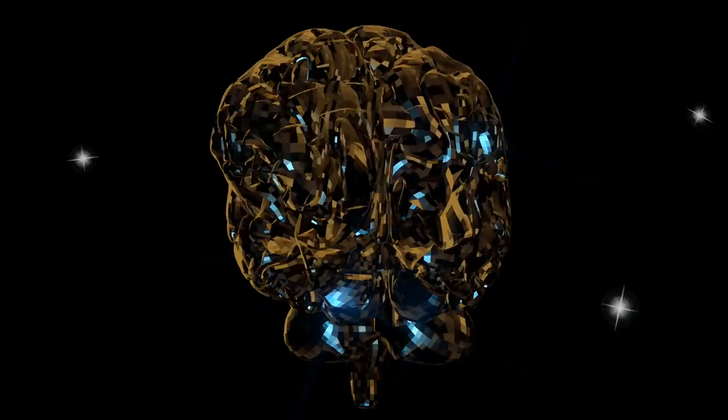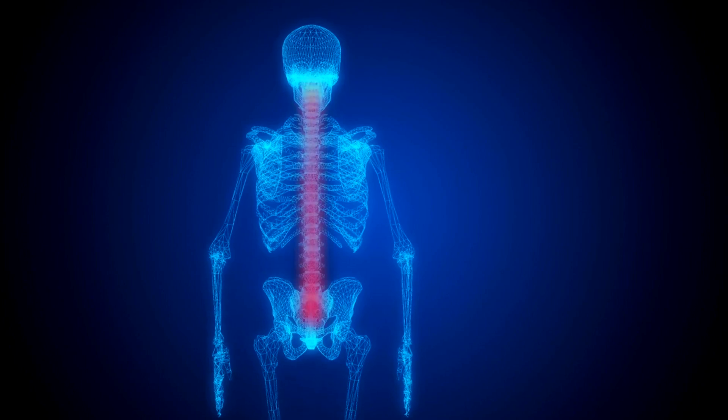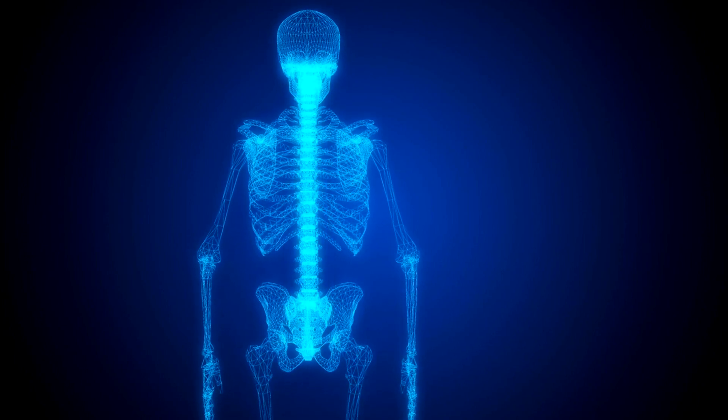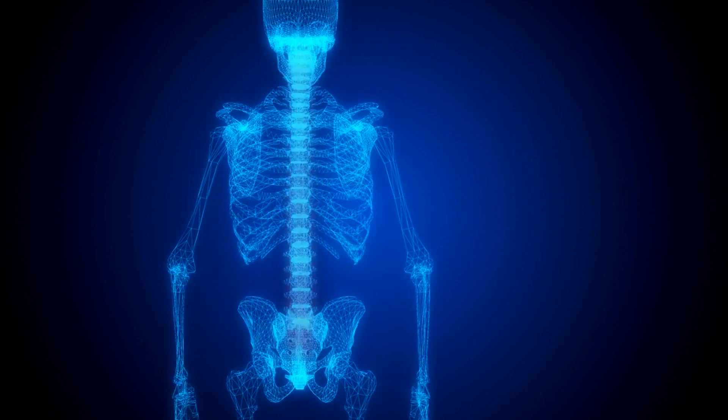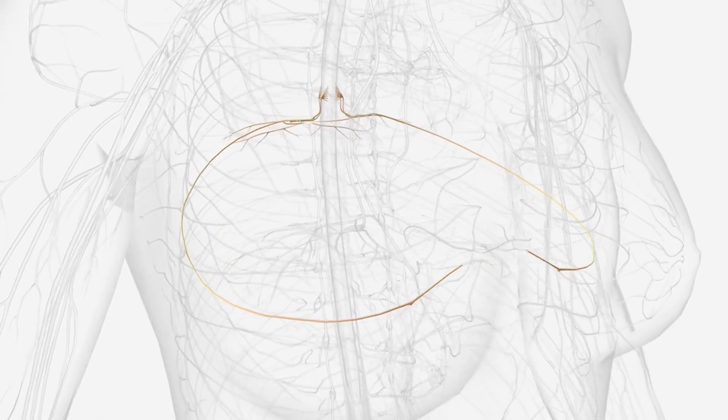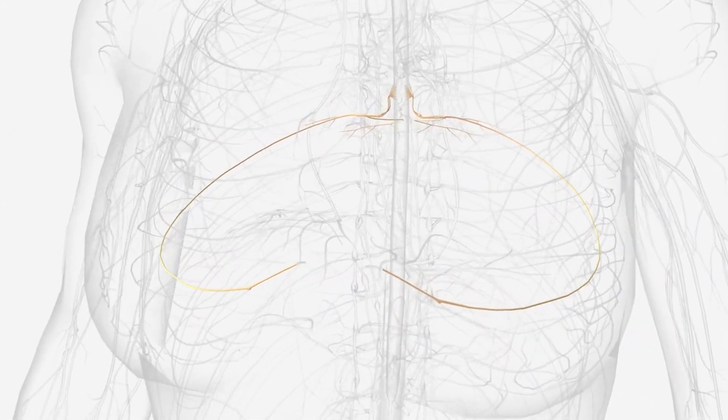The brain is the control center, processing information and sending out commands. The spinal cord, running down the spine, is the main pathway for transmitting information between the brain and the rest of the body. It's also responsible for reflex actions, which are automatic responses to certain stimuli.